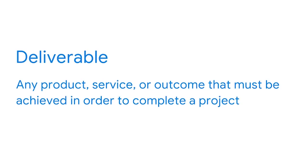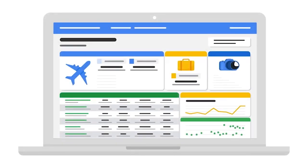After asking the right questions in order to thoroughly understand the project, it's time to define project deliverables. A deliverable is any product, service, or outcome that must be achieved in order to complete a project. This could be a new BI dashboard, a report, a completed analysis, or documentation of a process or decision. Pretty much anything requested by stakeholders can be a deliverable. In BI, the most common deliverables are the dashboards and reports that provide insights to users.